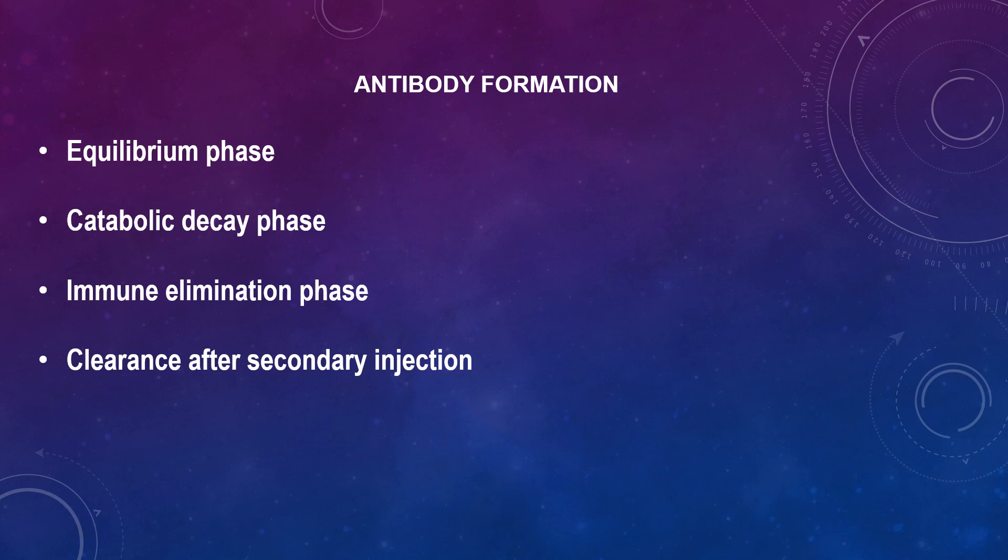Looking at antibody formation and the fate of the immunogen — specifically the kinetics of antigen clearance from the body after primary administration. There is an equilibrium phase, which is the first phase, during which the antigen equilibrates between the vascular and extravascular compartments by diffusion. This phase is usually very fast, and since particulate antigens don't diffuse, they do not show this phase.